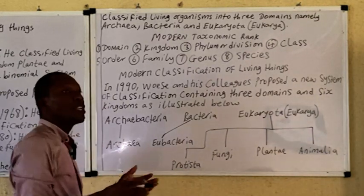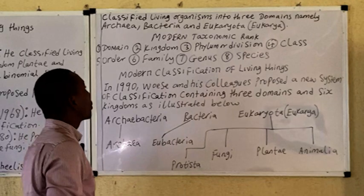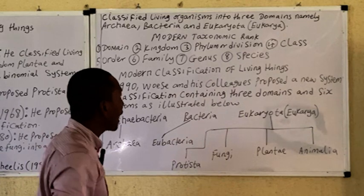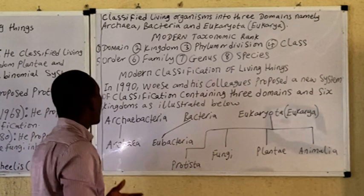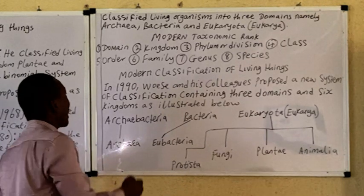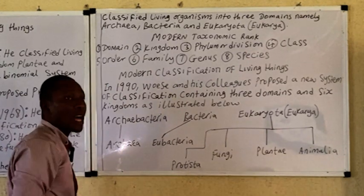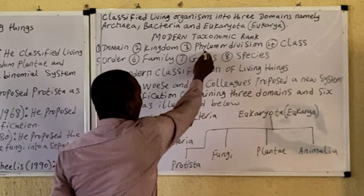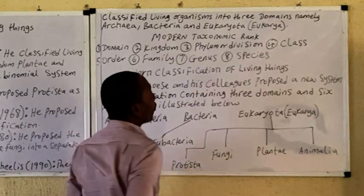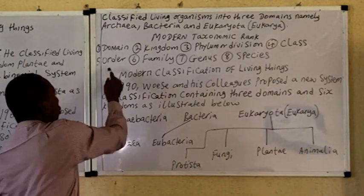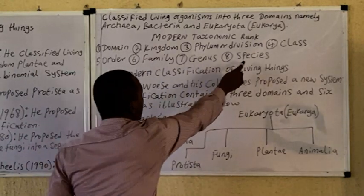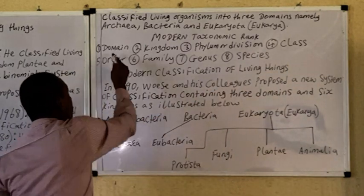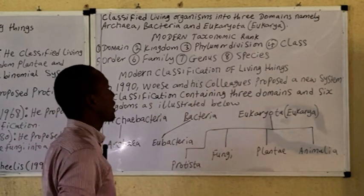Let's quickly look at the taxonomic ranks present in living organisms. Previously, the kingdom was the highest taxonomic rank, but that is no longer the case. Most scientists now accept that the domain is the current highest taxonomic rank, followed by kingdom, then phylum (for animals) or division (for plants), then class, order, family, genus, and species. Note that species is the lowest taxonomic rank while the domain is the highest.